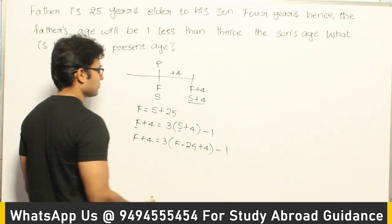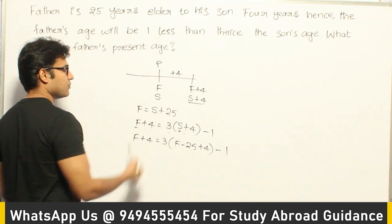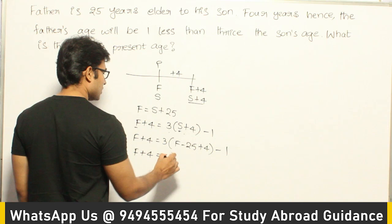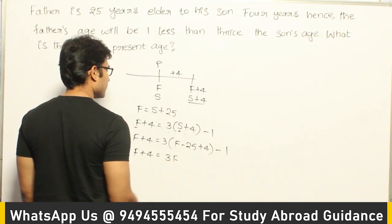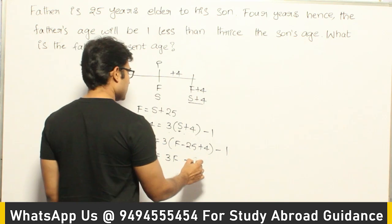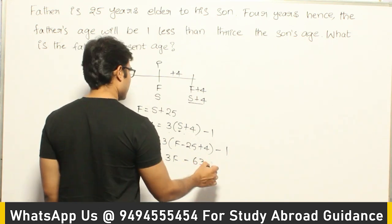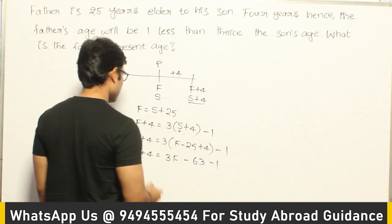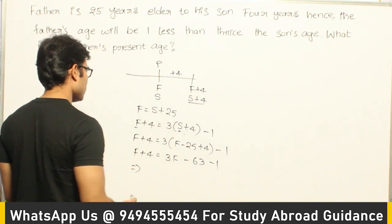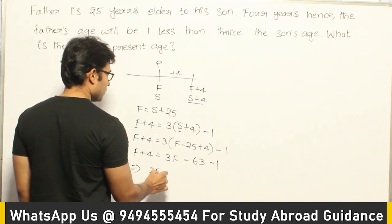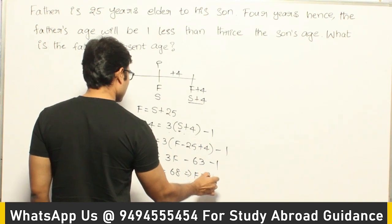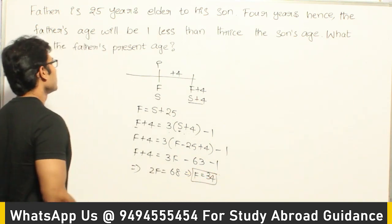In place of S I substituted F minus 25. So F plus 4 equals 3F minus 63 plus 4 minus 1, which gives F plus 4 equals 3F minus 60. Rearranging: 64 plus 4 equals 68, so 2F equals 68, which implies F equals 34 years. Father's present age is 34 years.